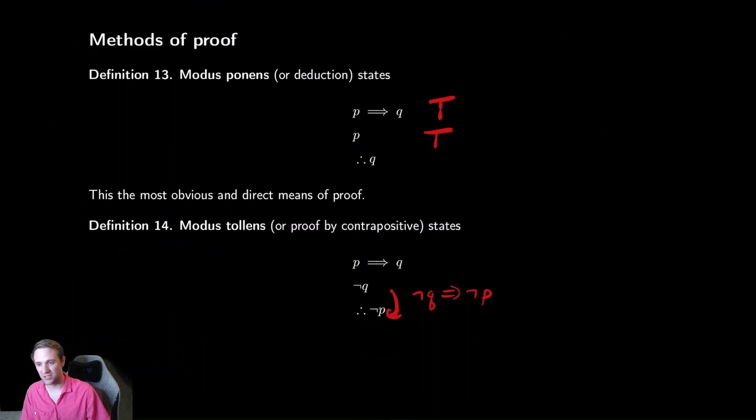And we showed with truth tables that those things were logically equivalent. These two means of proof and then the idea of proof by contradiction, which is in some circles considered controversial. There's some people called purists in mathematics that really don't like proof by contradiction.